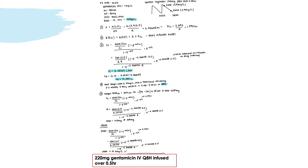We calculate K using the peak and trough values and the time between the two measurements, which is 4 hours. K = 0.36658 hr⁻¹ and the half-life is 1.89 hours. We then determine whether to use the short-infusion or bolus model. With a half-hour infusion time, 6 × 0.5 = 3, which is greater than the half-life calculated, so the short-infusion model is used.